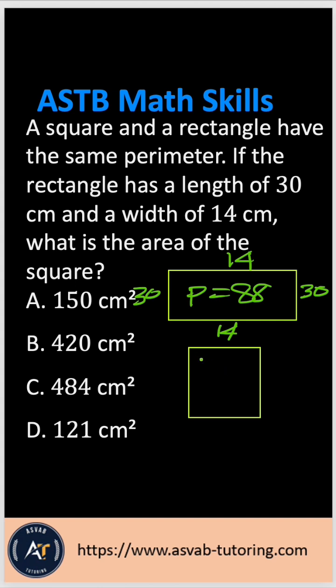Now if you want to find the one side of this square, you have to divide 88 by 4, so that gives you 22. Now the area of the square A equals 22 times 22. If you multiply that, that gives you 484, so that is the correct answer option.